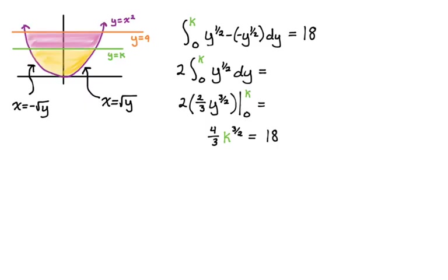Multiply by 3 fourths, and that'll give us k to the 3 halves is 27 over 2. Or again, k is equal to 27 over 2 to the 2 thirds. I actually think this approach is easier, but people sometimes just don't think in terms of dy, but it's a really good skill to have because a lot of problems are just that much easier when you do it. That's 2 approaches we could use. I hope you found this helpful, and good luck.